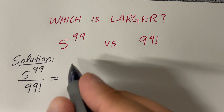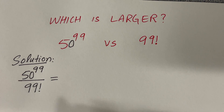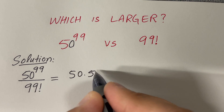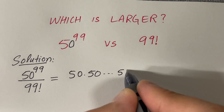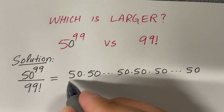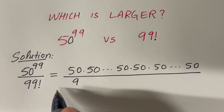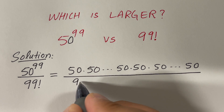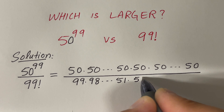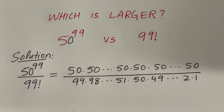So we have 50 raised to the power 99. I can write the numerator as 50 times 50 times 50 ... up to 99 factors of 50. The denominator is 99 factorial, which is the product of all numbers less than or equal to 99: so 99 times 98 ... times 51 times 50 times 49 ... down to 2 and 1.